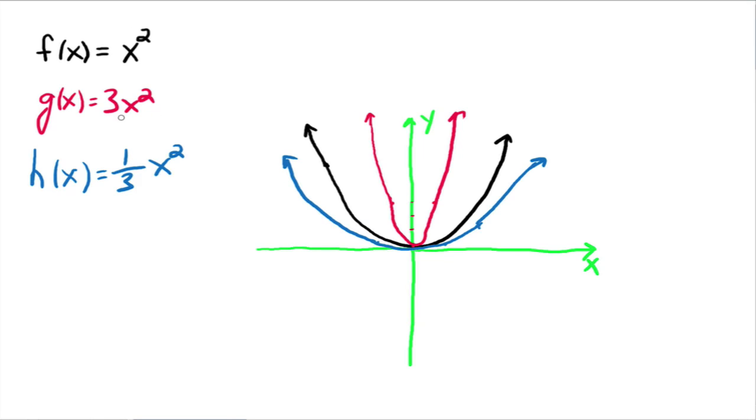We're multiplying our original function by some constant number. In this case, we multiplied it by 3, and that ended up giving us a vertical stretch. And down here, we ended up taking our original function and multiplying it by 1 third, which ended up giving us a vertical shrink. So let's summarize this up.